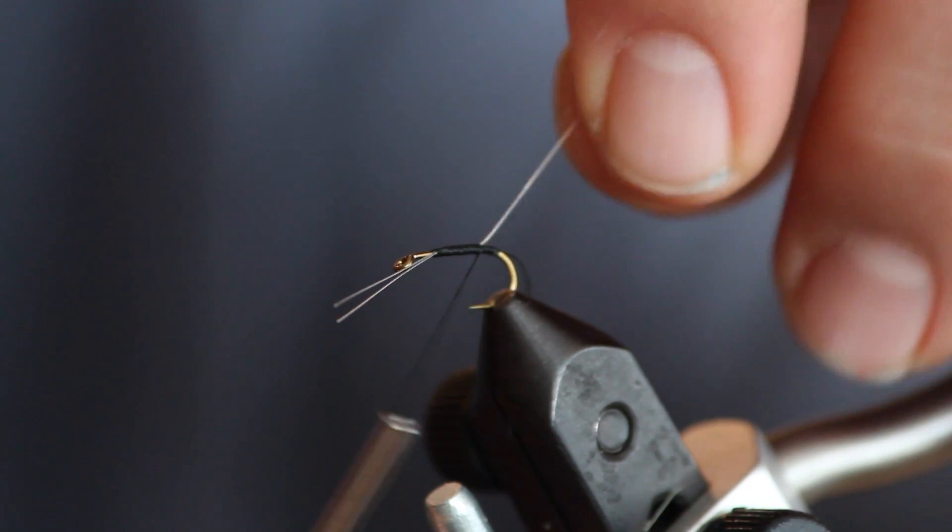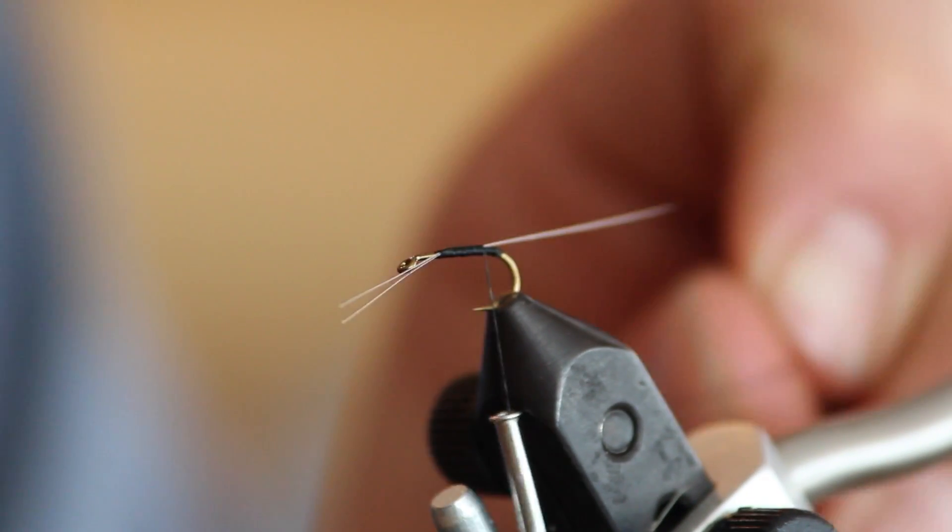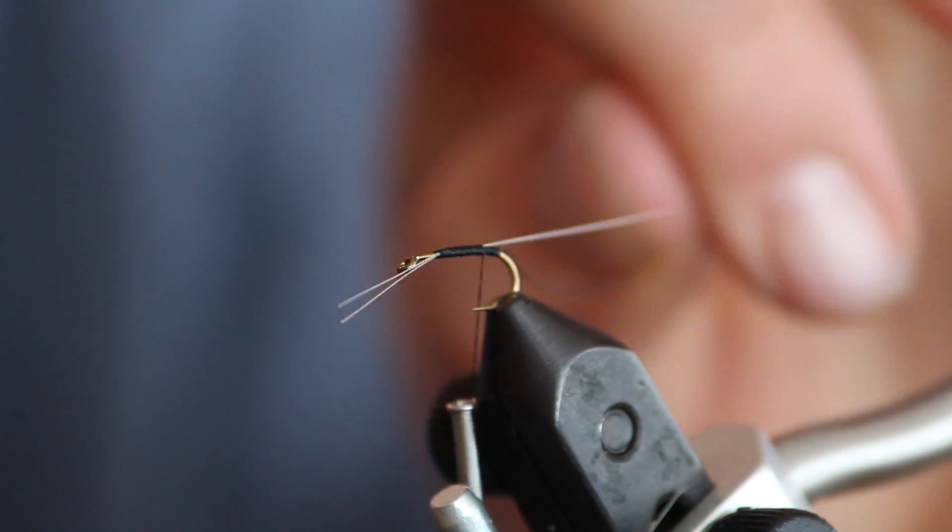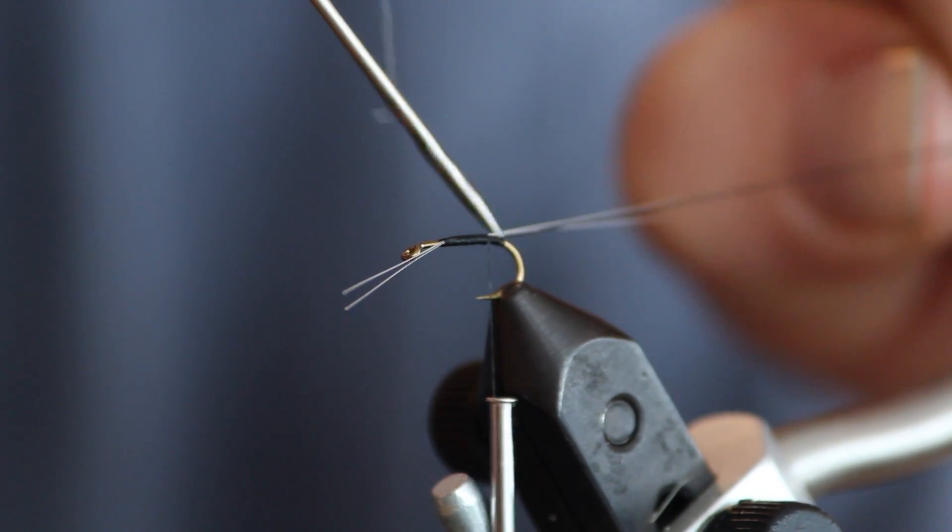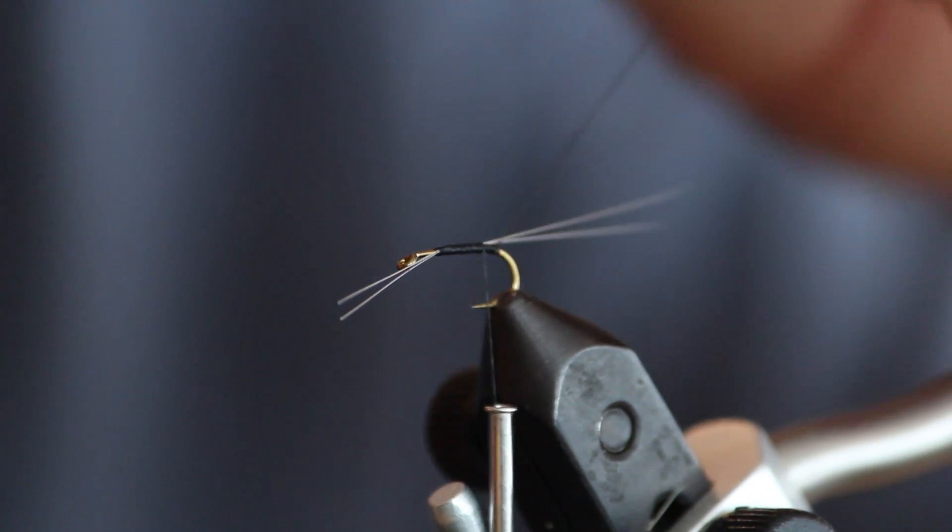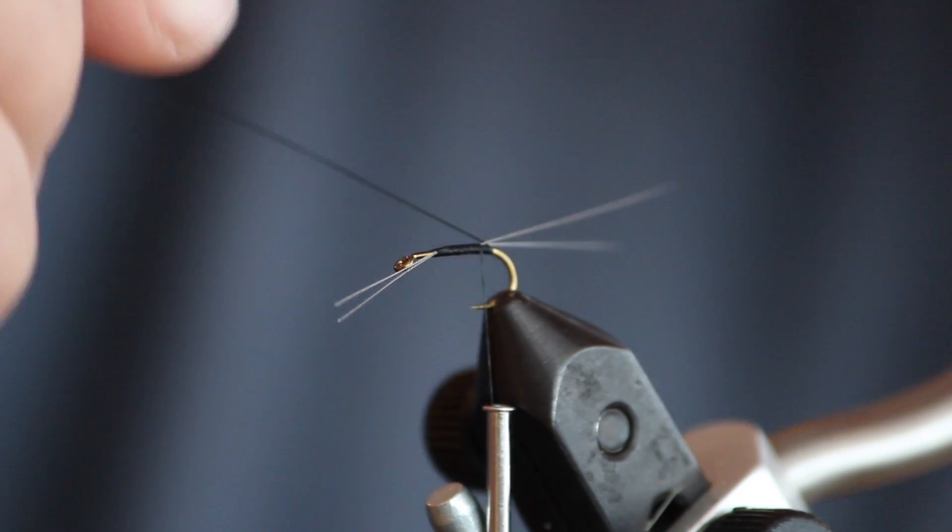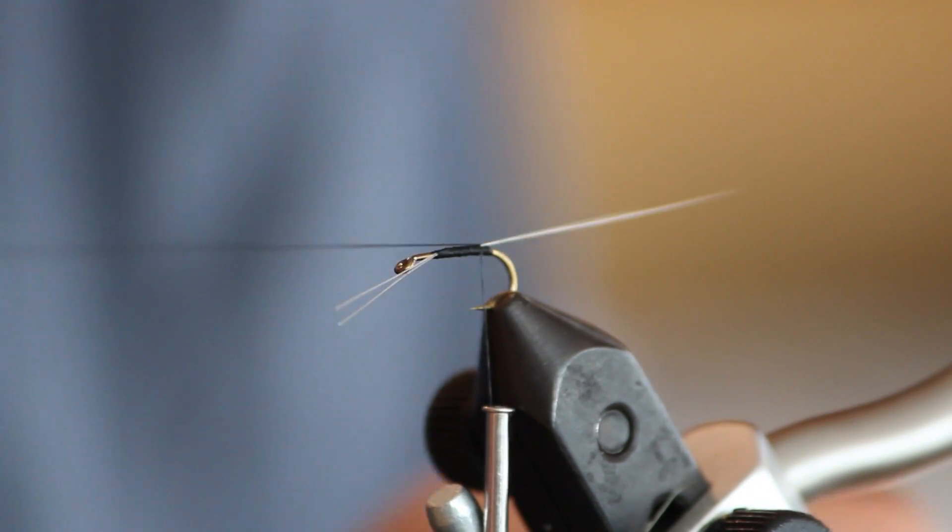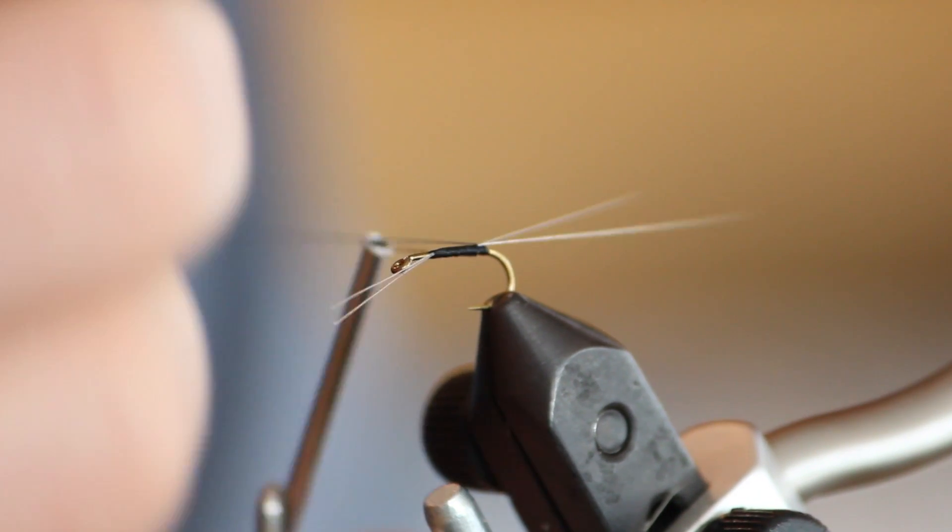Once your microfibbets are secure, take your 3-4 inch tag end that you started with and pull them up and in between your microfibbet tails. You can split it with a bodkin. Then pull it towards the eye of the hook and make thread wraps to secure this microfibbet thread.